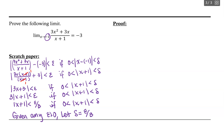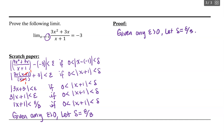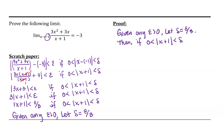Let's go ahead and formalize this into a proof. Given any epsilon greater than 0, we're going to let delta equal epsilon over 3. Then if we choose x values carefully so that those x values are close enough to negative 1 — that is, if the distance between the x value and negative 1 is within delta of negative 1 — what will happen?